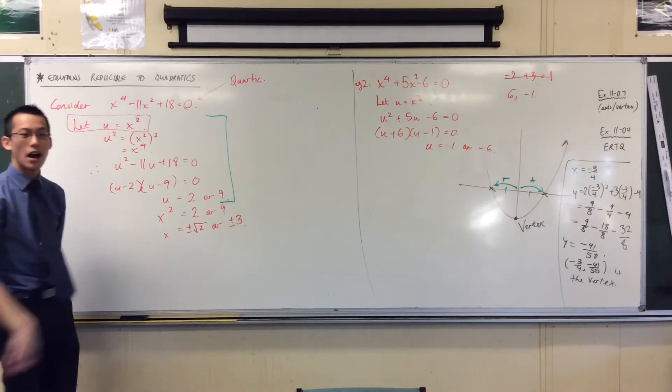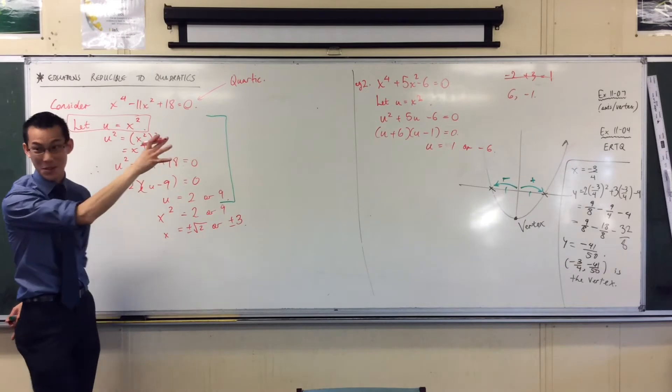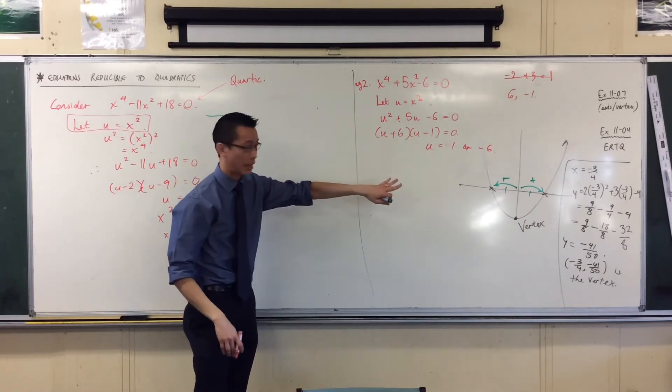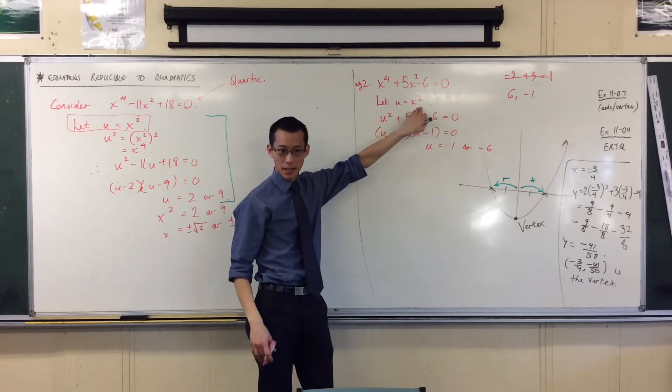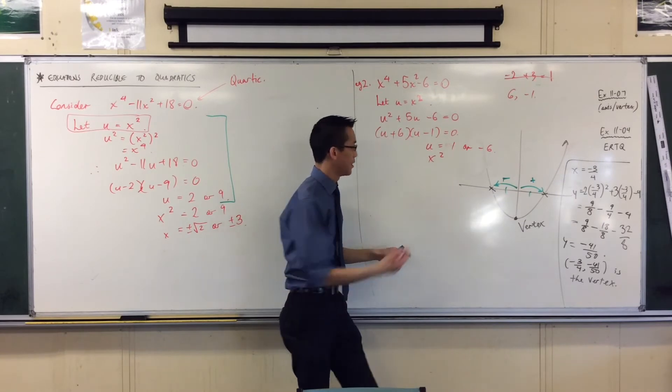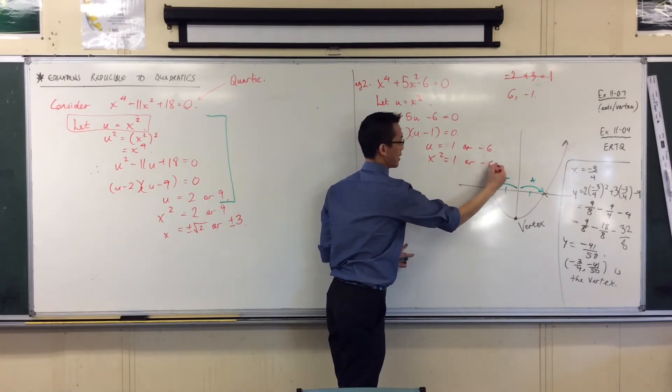Okay, so I've done my substitution correctly. I've factorized. I've gotten a pair of solutions out for u. So now I have to go back, don't I? I have to go back to here and I have to say x squared instead of u. So there's my 1 or my negative 6.